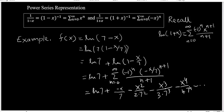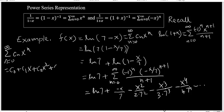And then again if you compare this one with summation n goes from 0 to infinity cn x to the n, which is basically as you have seen before c0 plus c1 x plus c2 x squared plus c3 x to the 3 and so on.